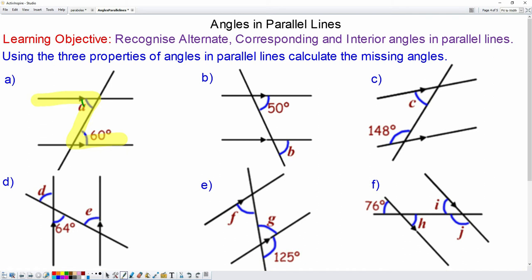So angle a will also be 60 degrees. For question b, you can see the 50 degree angle and angle b are in a backwards f. This means that they are corresponding, so angle b will be equal to 50 degrees.